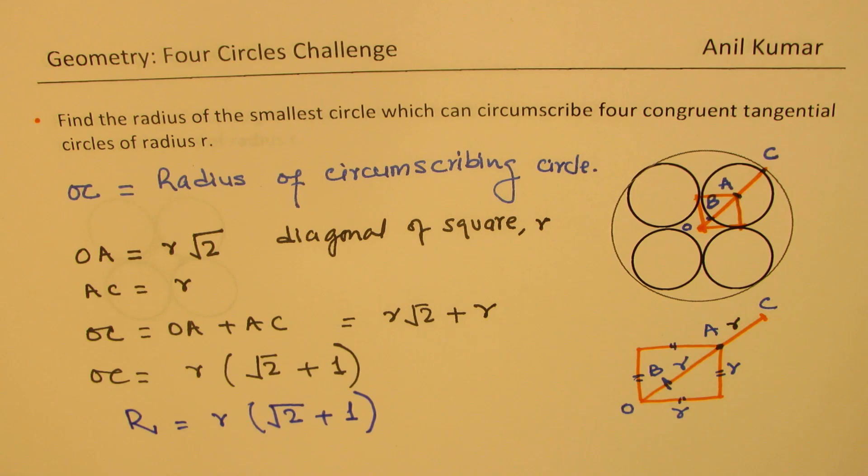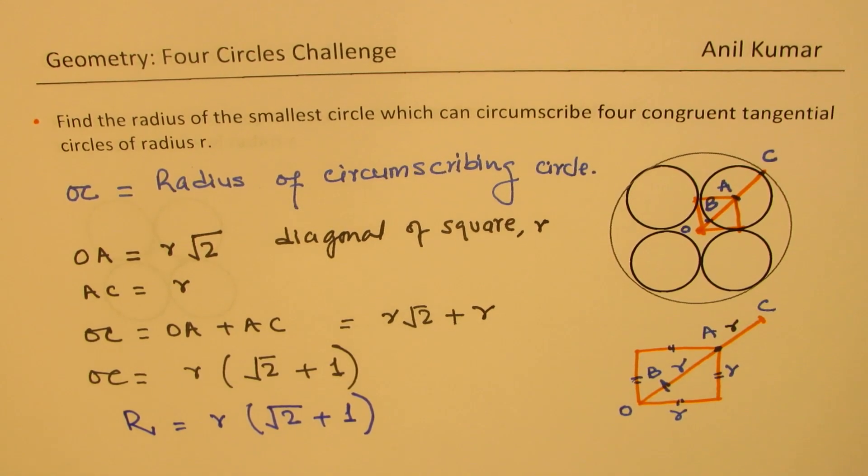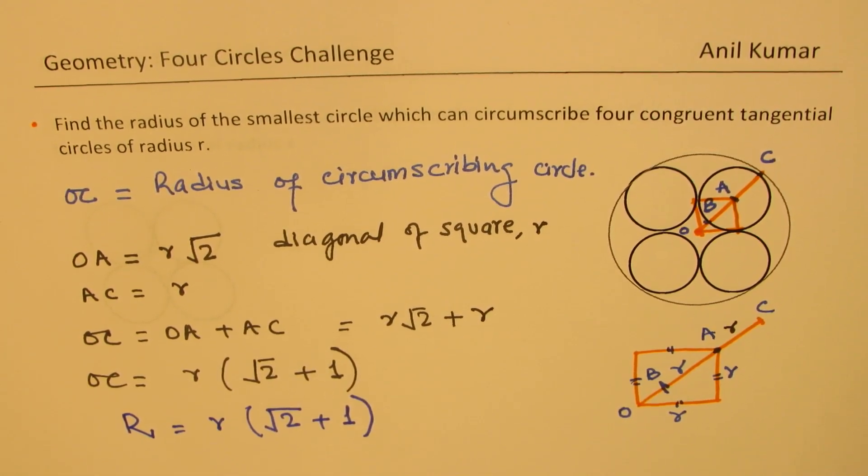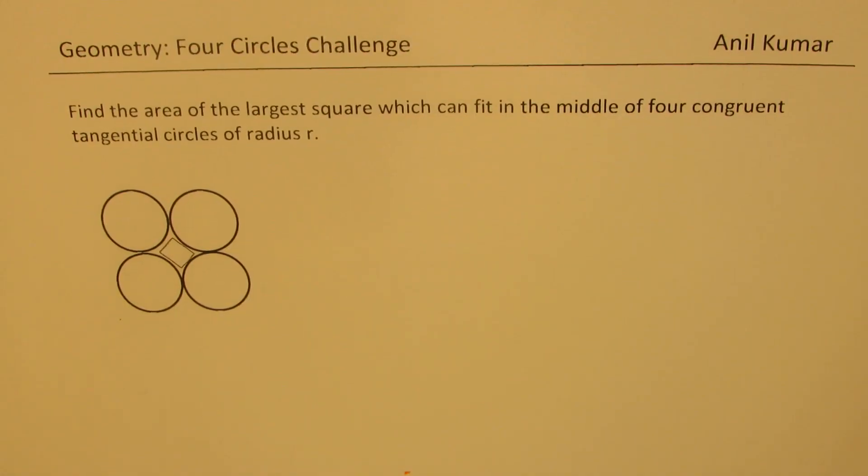Now these strategies can help you find the area outside, inside, and all those combinations also. So I hope this concept is clear. Now let's take another example based on the similar situation. The third question here is: find the area of the largest square which can fit in the middle of four congruent tangential circles of radius r. You can actually pause the video and answer this question.